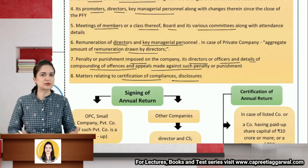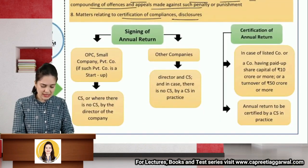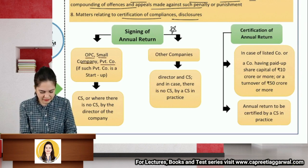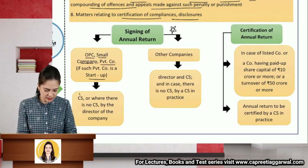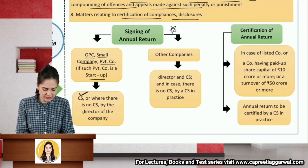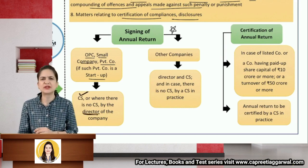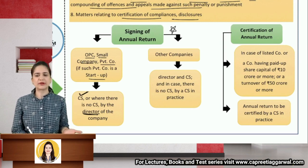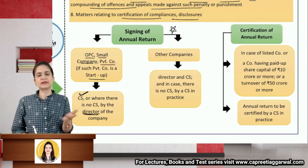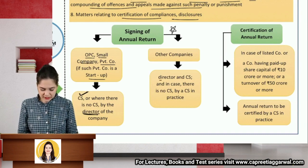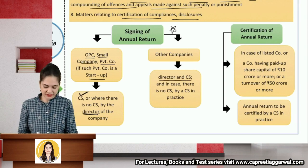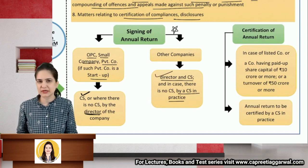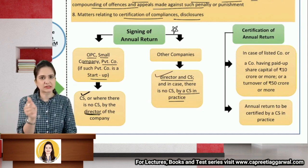Regarding signing: for a One Person Company, small company, private company, or startup, the annual return can be signed by the company secretary, or where no company secretary is appointed, by a director. For other companies, it must be signed by a director and company secretary. If no company secretary has been appointed, then a director and a company secretary in practice must both sign.